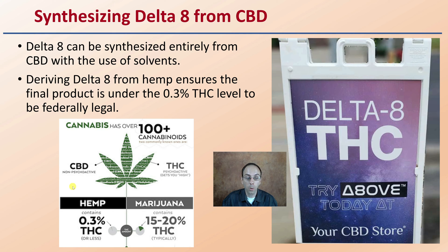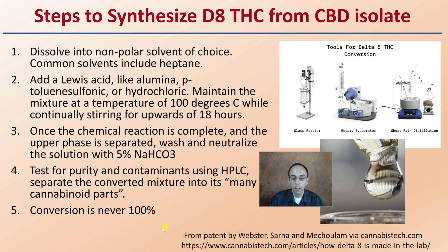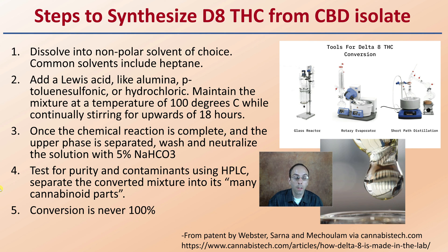Marijuana is anything above 0.3% THC from a federal standpoint, which is why you see large signs advertising Delta-8 THC — it's currently classified as hemp, giving it much more legal options to be sold. The synthesis steps to produce Delta-8 THC from a CBD isolate include dissolving in a nonpolar solvent such as heptane, adding a Lewis acid, maintaining certain temperatures, stirring for a long period, performing phase separation, neutralizing the solution, and testing for purity and contaminants using high-pressure liquid chromatography. Despite these very specific scientific steps, the conversion is still never quite 100%.